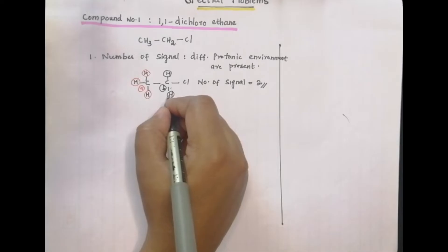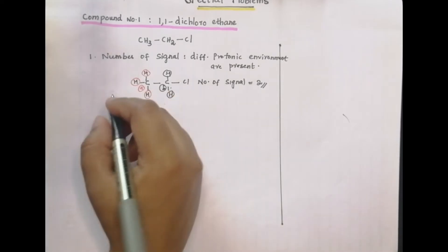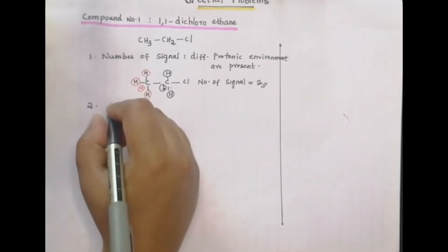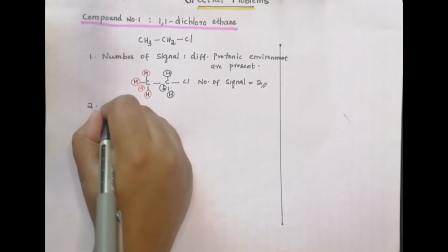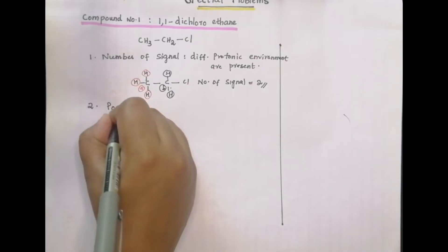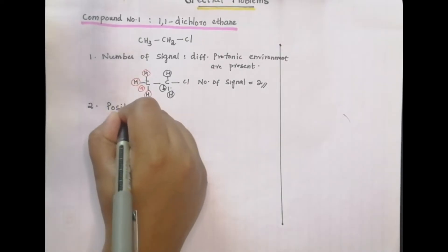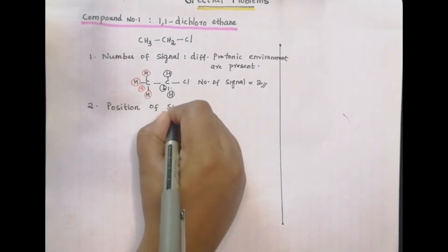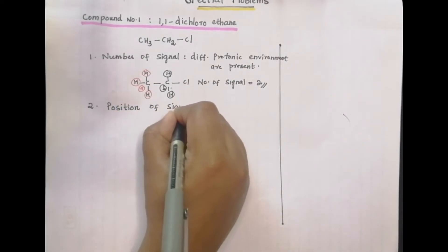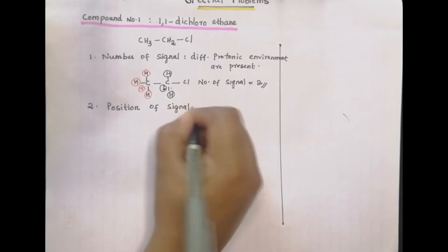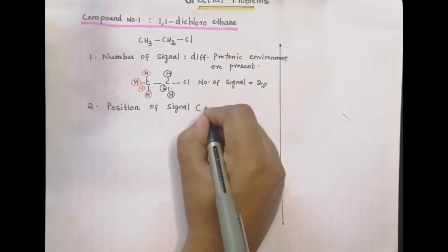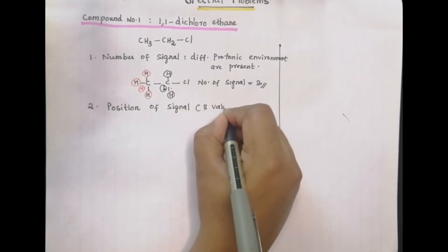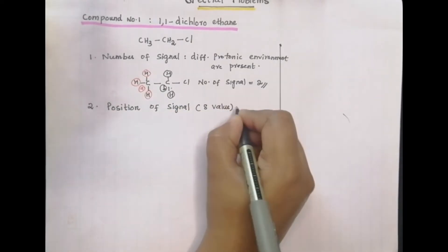The next step is the position of signal. The position of signal is given by the delta value.